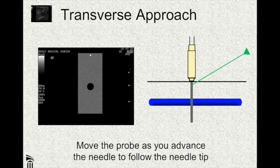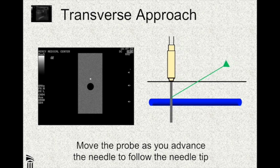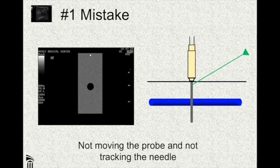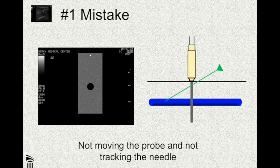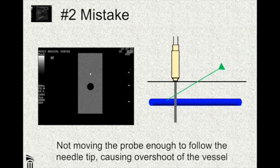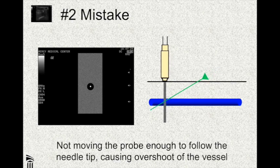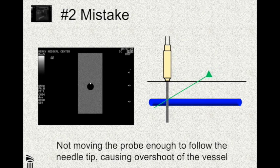The downside to the transverse approach is you have to move the probe in order to track the needle tip, and it's very easy to lose sight of the needle tip. Looking at the probe model on its side, we see the beam as a thin line. The rookie mistake is putting the probe down, putting the needle in, and not moving the probe — you don't see a whole lot happening because you're looking at the wrong part of the needle. The second most common mistake is moving the probe but not moving it enough, not keeping up with the tip. So you're looking at the shaft of the needle, which looks like it's going directly into the blood vessel, but the tip is actually past the far wall.